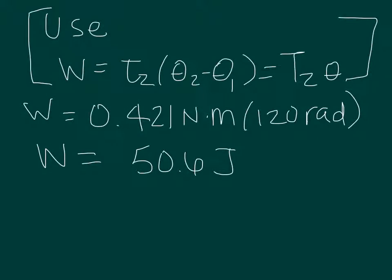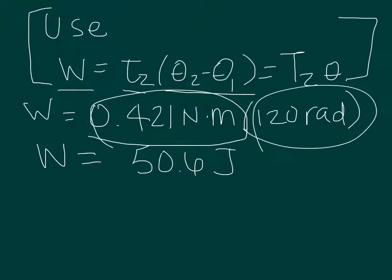The next part of the problem asks us to use this equation work equals torque times the change in the angle to find the work. So here we have 0.421 newton meters times 120 radians. So we find our work to be 50.6 joules.